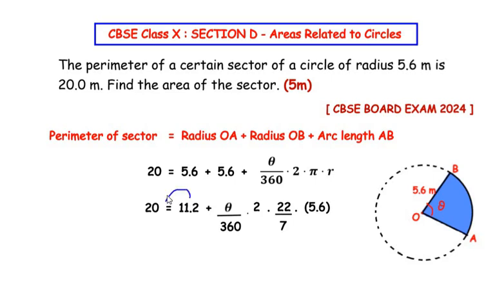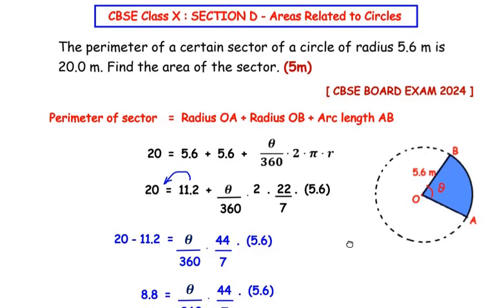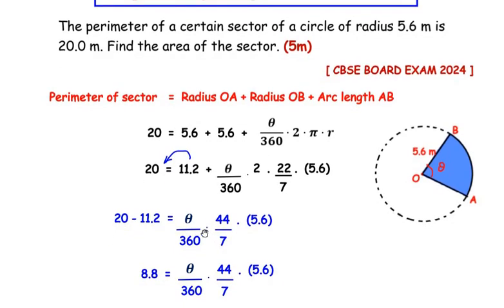So we get 20 minus 11.2 equals θ/360 times 44/7 times 5.6. So 20 minus 11.2 will give us 8.8 equals θ/360 times 44/7 times 5.6.